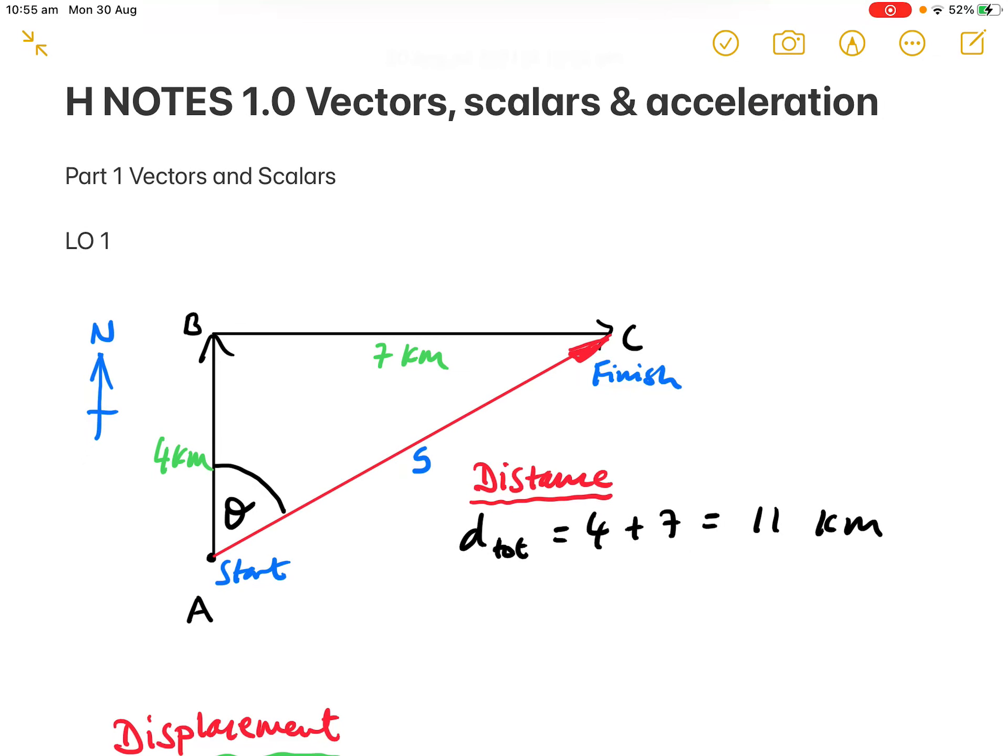These are notes for the Higher Physics course, Unit 1, Section 0, so that's 1.0, Vectors, Scalars, and Acceleration.